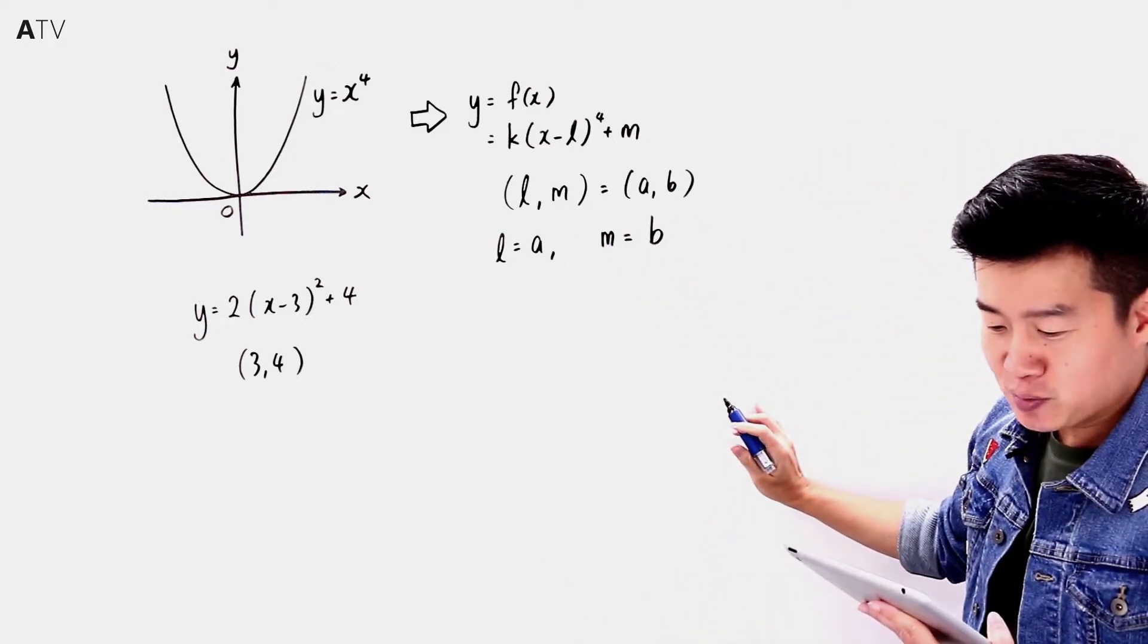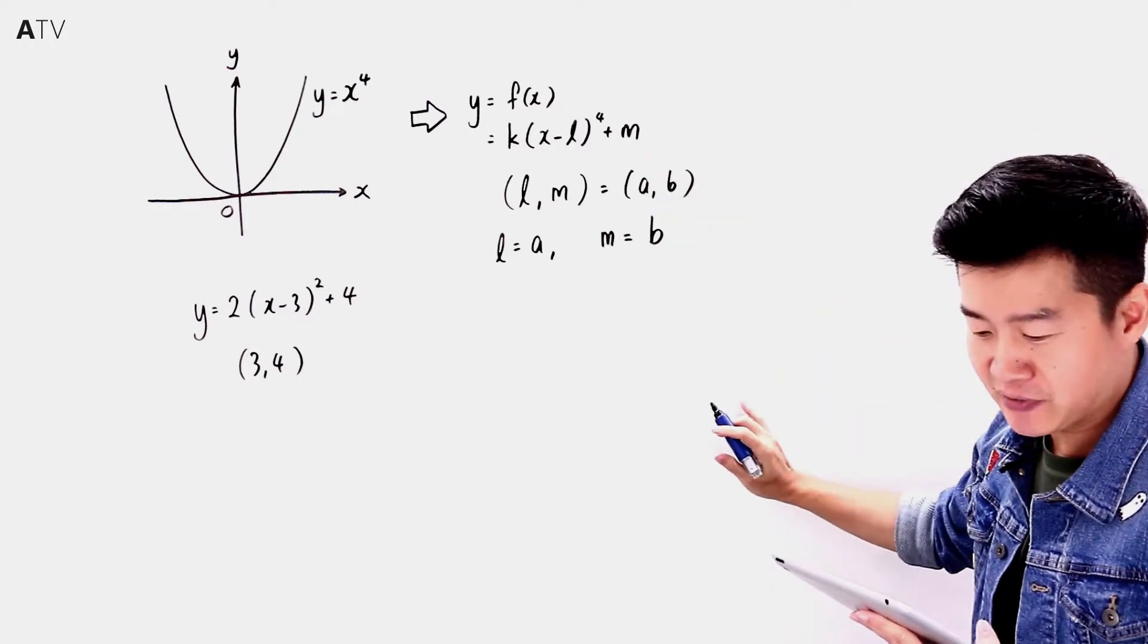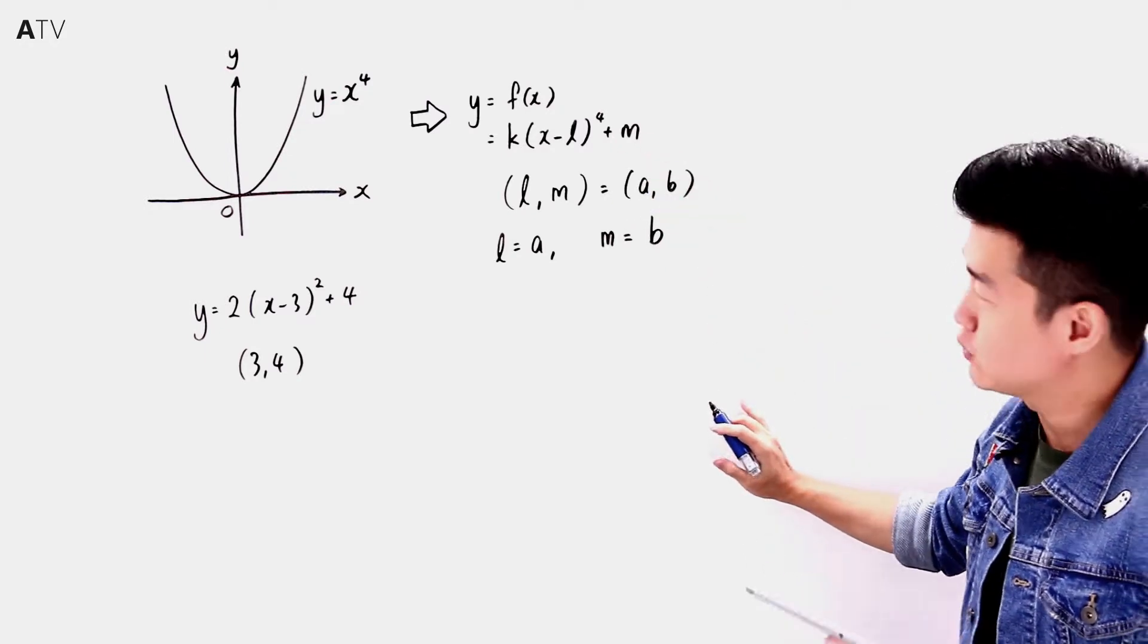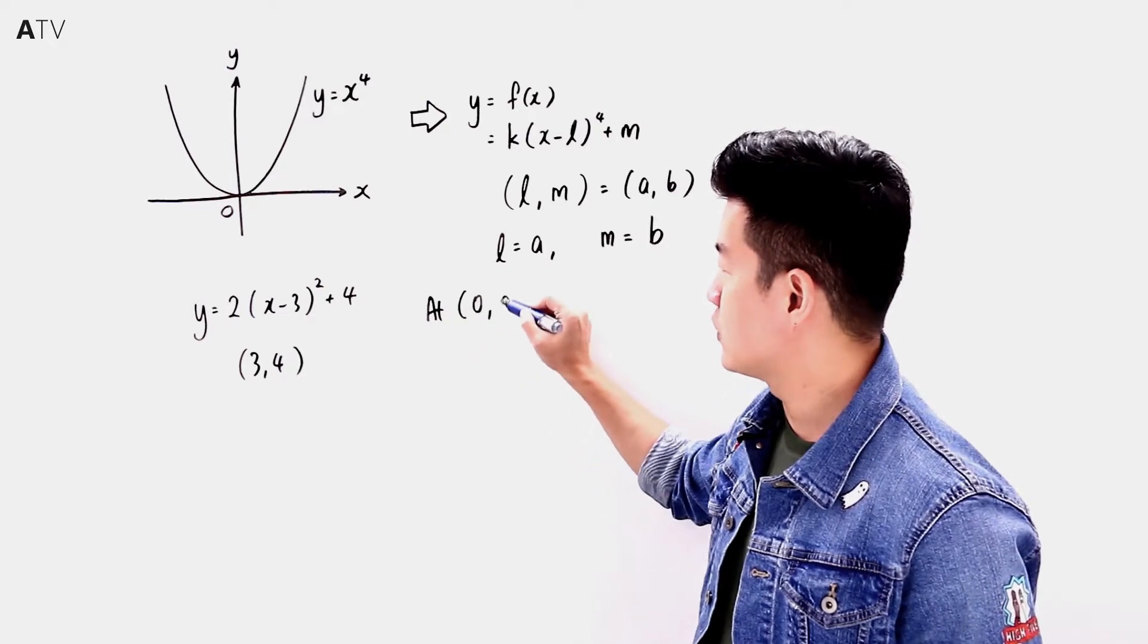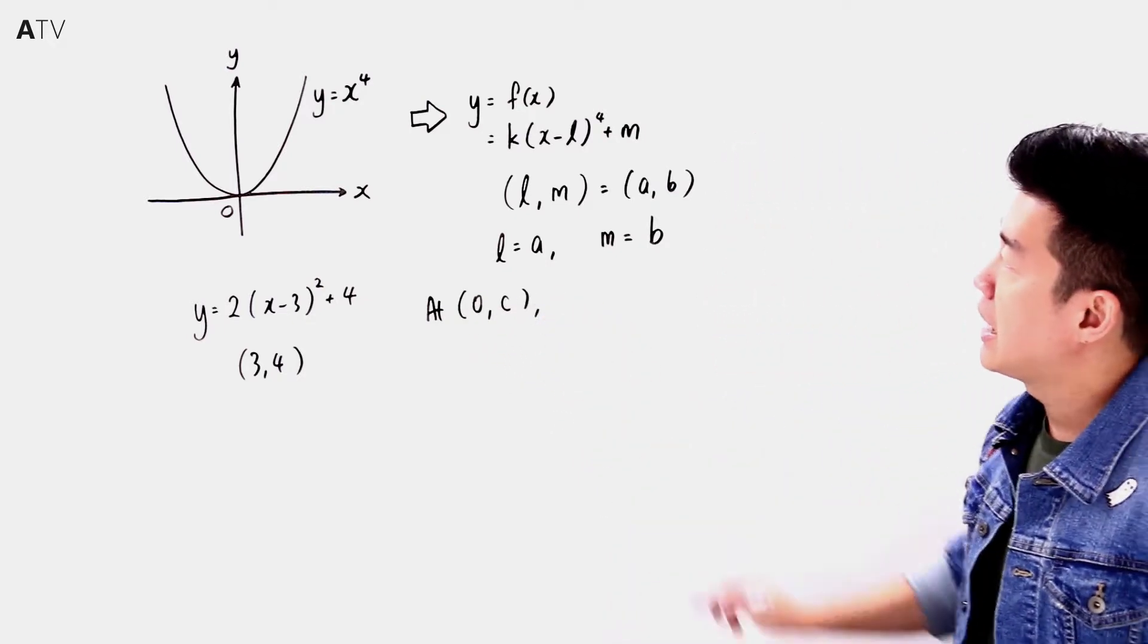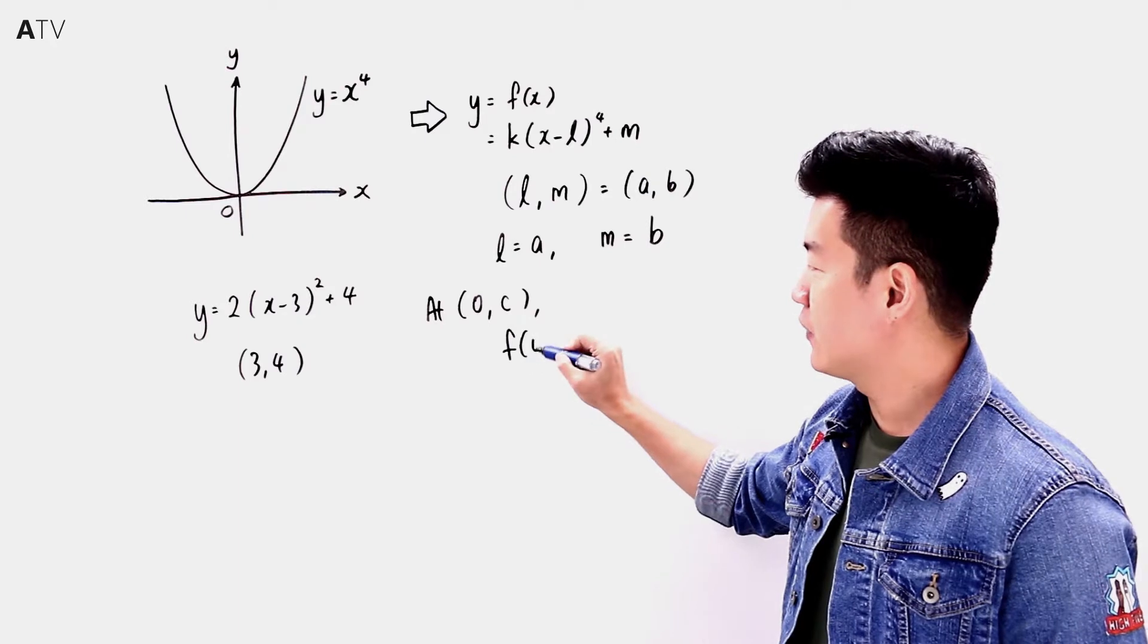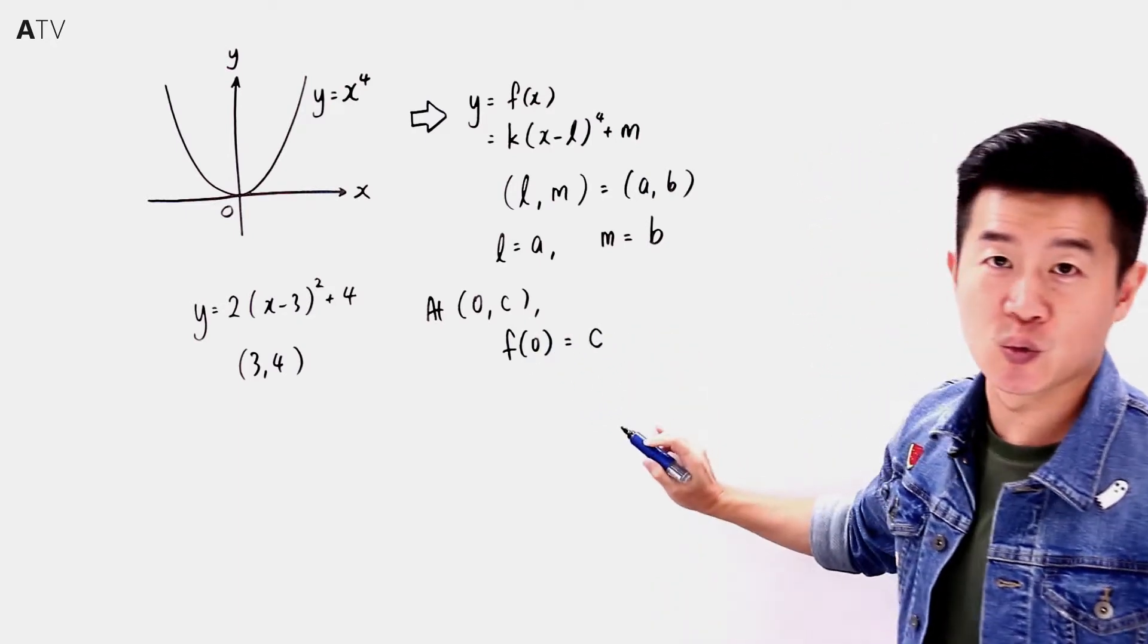It is further given that this curve passes through the point (0, c). So at (0, c), that means f(0) = c.